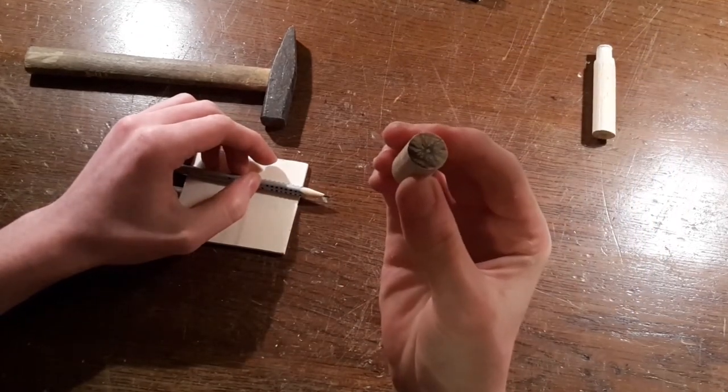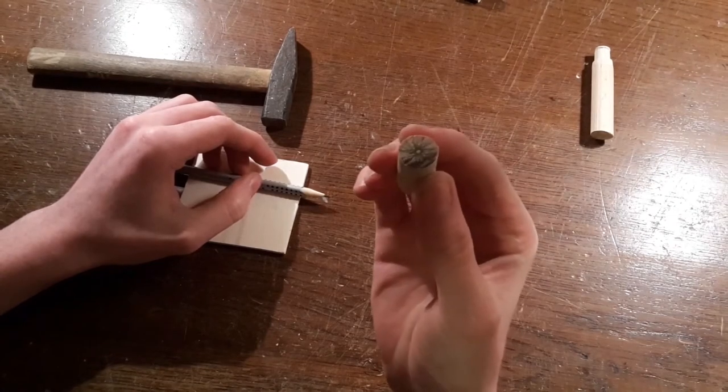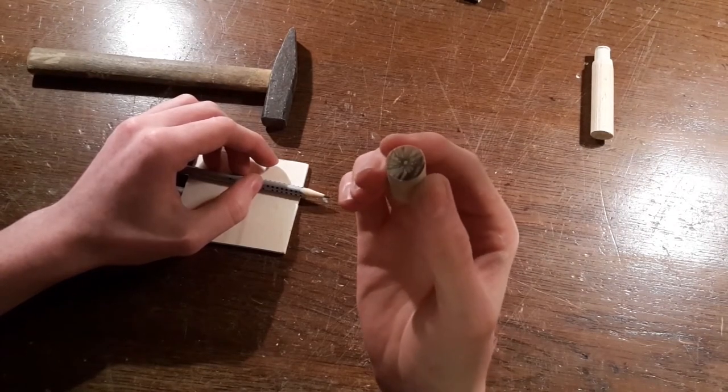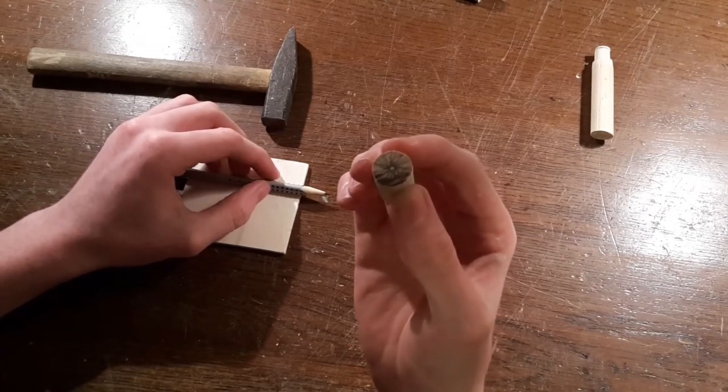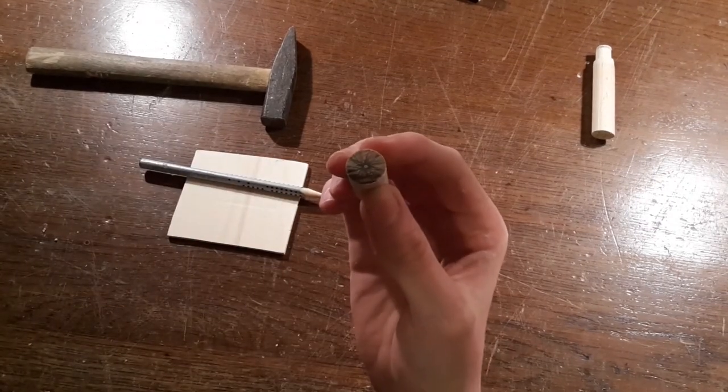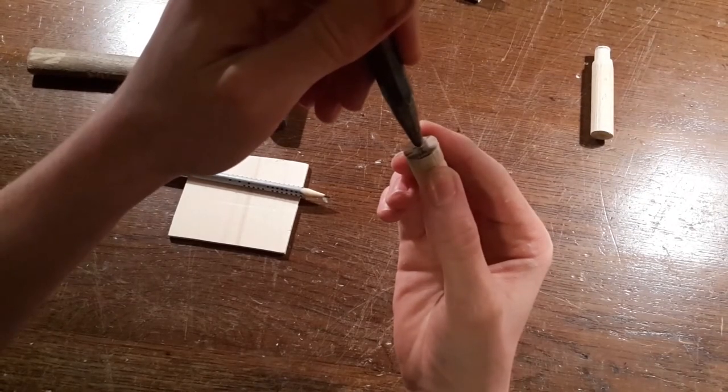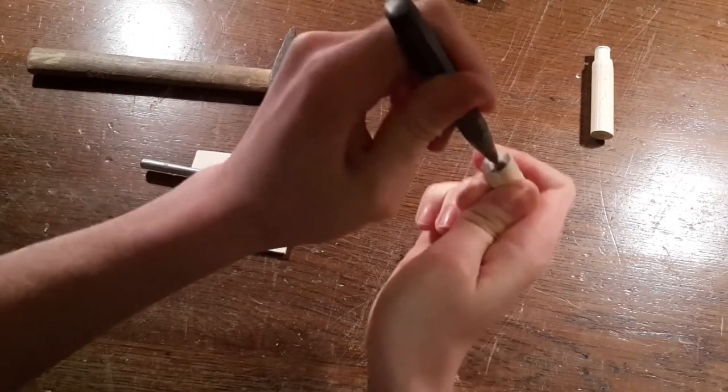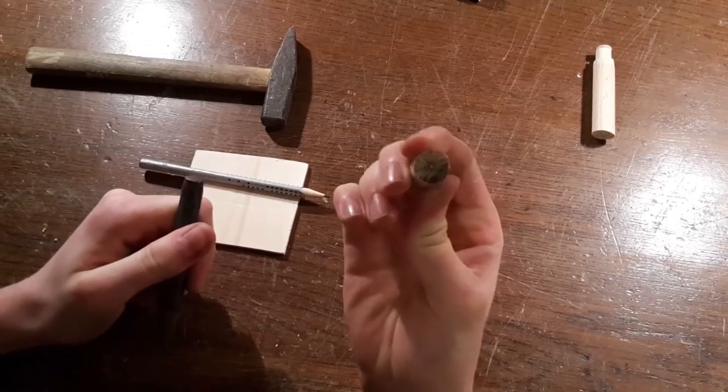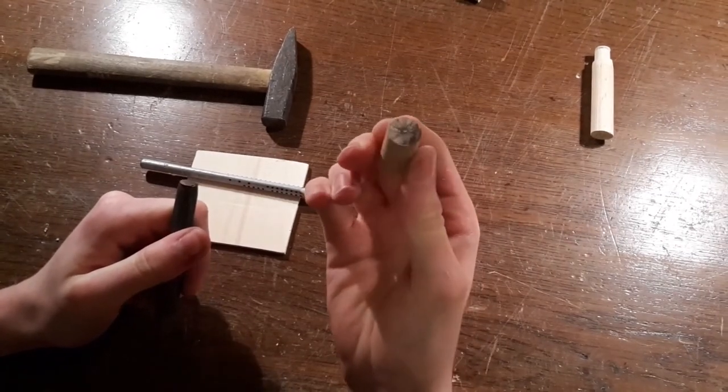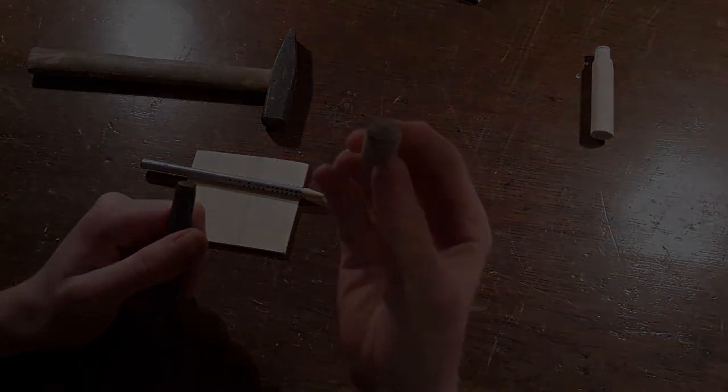Now you've got the exact center of the dowel marked with a pencil, and then you can mark it with a center punch like that. Now you've got the exact center of your dowel marked and ready for drilling.